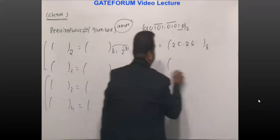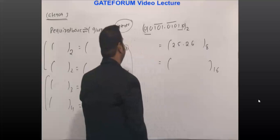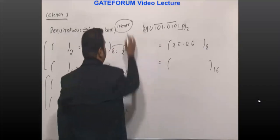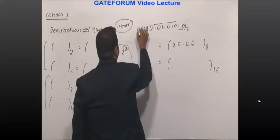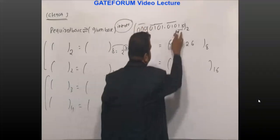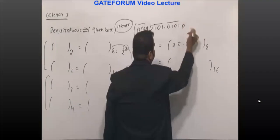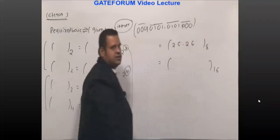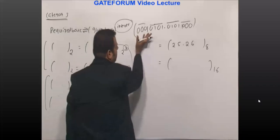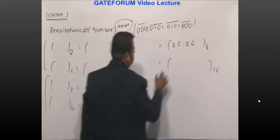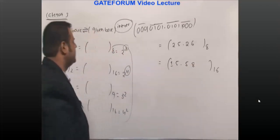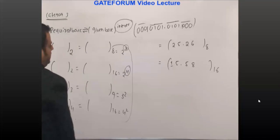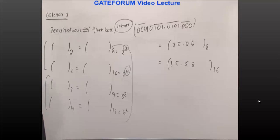Suppose I want the hexadecimal equivalent of the same number. Since 16 = 2⁴, the integer value is 4, so instead of grouping by 3, I should group by 4. On the left side there are 2 digits, so append 2 zeros to complete the group; on the right side append more zeros as needed. The hexadecimal equivalent works out to 1, 5, 5, 8.